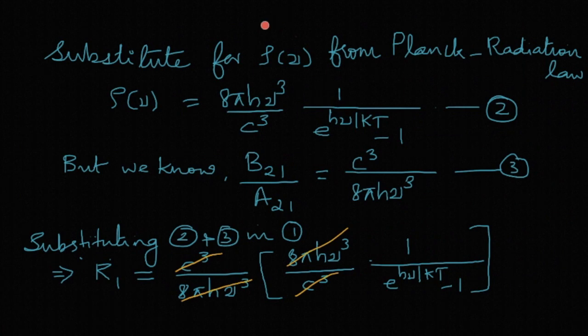Now ρ(ν) is given by 8πhν³/c³ times 1/(e^(hν/kT) - 1). And from Einstein relations we have B21/A21 is c³/(8πhν³). So substituting these two equations - that is second and third - back into the first equation, some of the terms get cancelled and we are left with R1 is equal to 1/(e^(hν/kT) - 1).